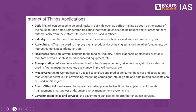What are the advantages of Internet of Things? In daily life, it can do small tasks such as making coffee as soon as the owner returns home, or a refrigerator indicating vegetables need to be bought or ordering them automatically from an e-store. Industry can use IoT to reduce human error, increase efficiency, and improve productivity. In agriculture, IoT improves productivity through enhanced weather forecasting, soil nutrient content monitoring, and pest infestation detection. In healthcare, benefits include better disease diagnosis, wearable vital monitors, sophisticated connected equipment, and heart monitor implants.